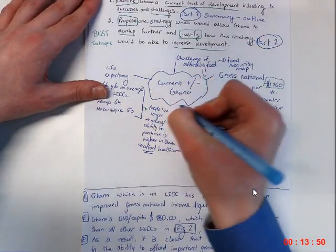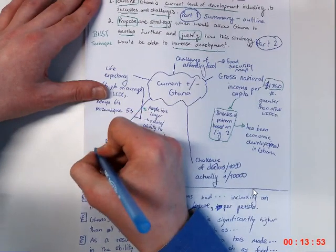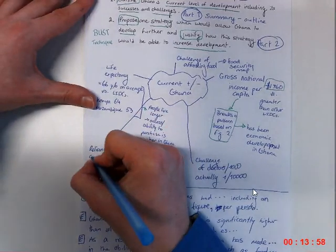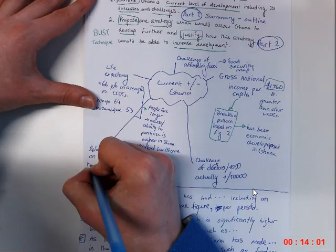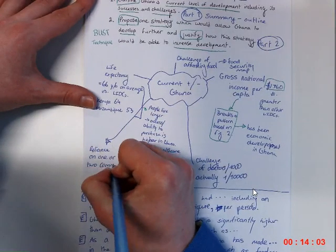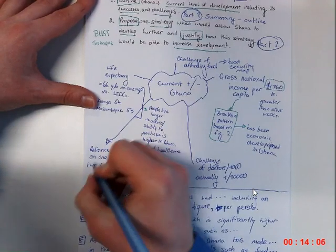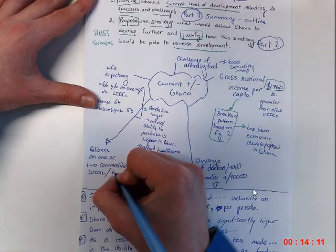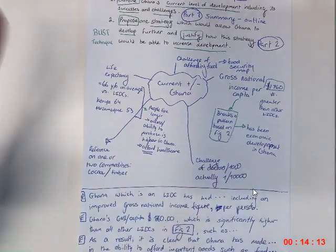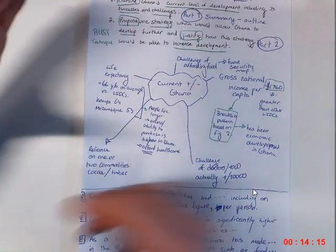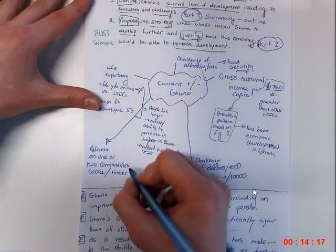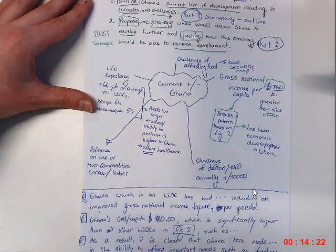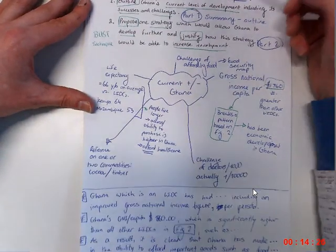There are many other challenges, and I'm just going to refer to one more, which is a reliance on a single commodity, which I believe Ms. Buckley was talking about in the hall. So reliance on one or two commodities. And those commodities would be cocoa, which is in your resource booklet, and timber. I think there was one more, I can't remember the name of it, but these are, if the prices of these, for example, were to go down, that would be a significant challenge for Ghana to have to try and overcome in some way.